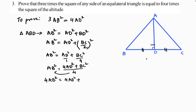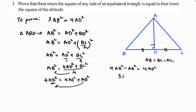Since it is an equilateral triangle, AB equals BC equals AC, so in place of BC I can write AB. Transposing AB² to the left side: 4 AB² minus AB² equals 4 AD², which gives 3 AB² equals 4 AD². This proves that 3 times the square of any side — AB, BC, or AC, since all sides are equal — is equal to 4 times the square of its altitude.